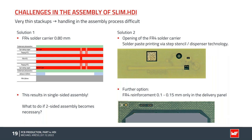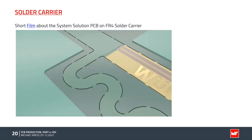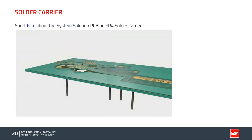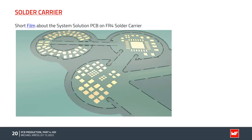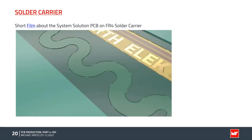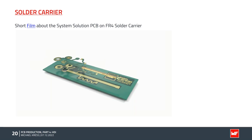I will show you a short film. Here you can see the snap-out from the PCB to the solder carrier. Here you see the very thin PCB and the solder carrier with the bits. After that, you can snap out the PCB from the solder carrier — it goes very easily. Then you can use the very thin PCB, and the solder carrier is discarded as waste.